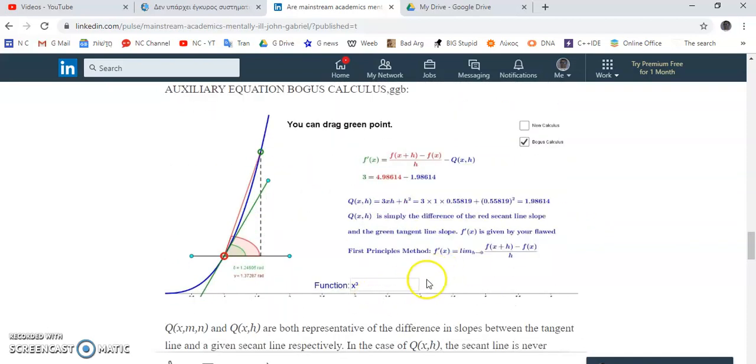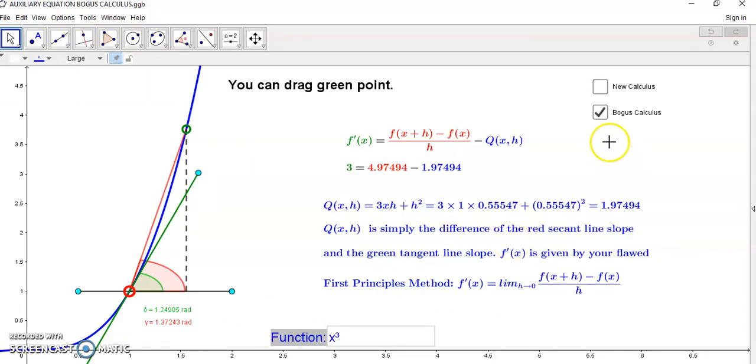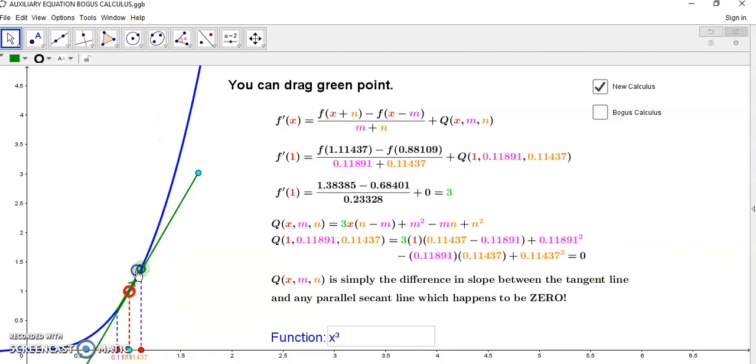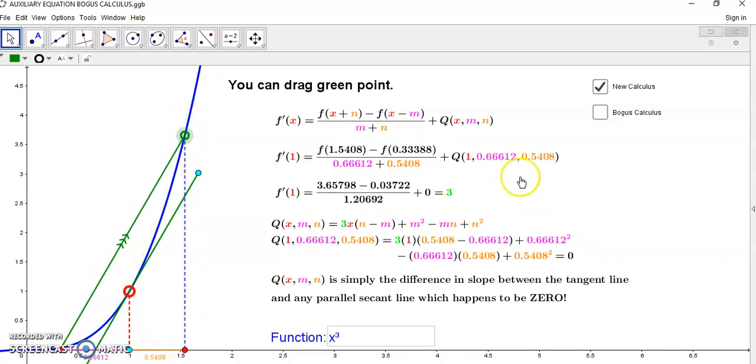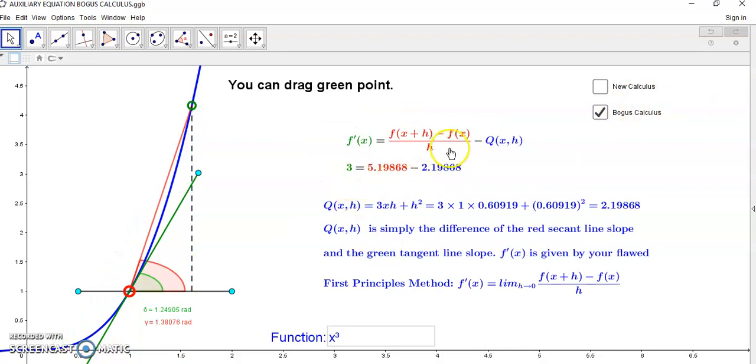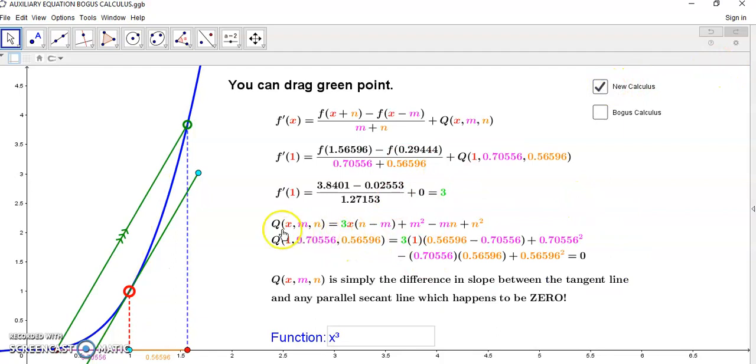In the new calculus, the slope between a parallel secant line and the derivative is always zero. It doesn't matter where you are. It's always zero, and the derivative is always three, always correct, unlike your bogus calculus where this expression here is never the derivative unless Q(x,h) is zero. That's the only time, and it's not even defined at that point there. The new calculus solves all these problems. The new calculus has an auxiliary equation where the difference here must be zero because the difference in the slopes of these parallel lines is zero.